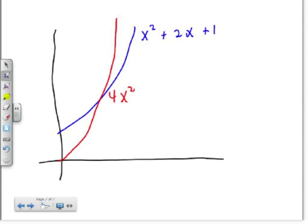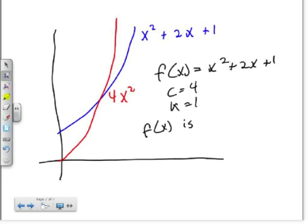As you can see, 4x² will outgrow x² + 2x + 1, and it will continue to be larger than it as x approaches infinity. Thus, if f(x) is x² + 2x + 1, we prove that the witnesses are C equals 4 and K equals 1, so f(x) is Big O of g(x) when g(x) is x².